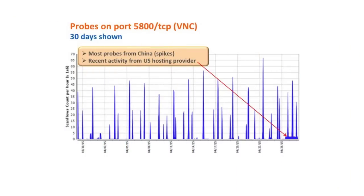Next, probes on port 5800 TCP — associated with virtual network computing. We've seen activity in the past on ports 5900, 5901, and 5902 associated with VNC, but in this case we're seeing probing on port 5800 specifically. Most big spikes in the graph are associated with sources from China. More recently, there's been activity from a US hosting provider — a couple of addresses appearing to participate. Port 5900 is used by the native VNC client, while port 5800 is a web interface to VNC — used when you've enabled VNC over HTTP.